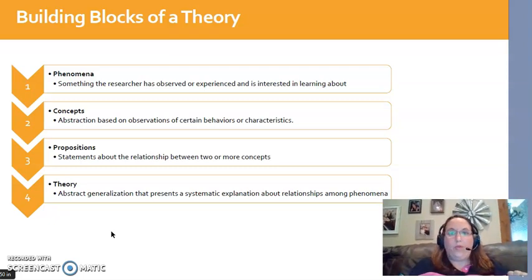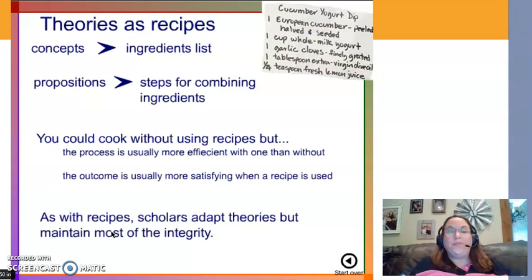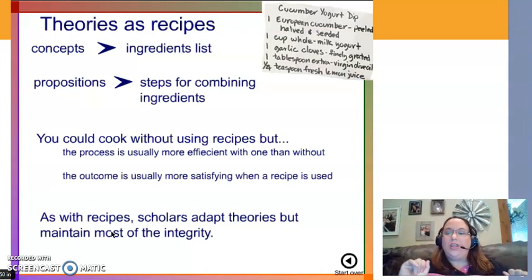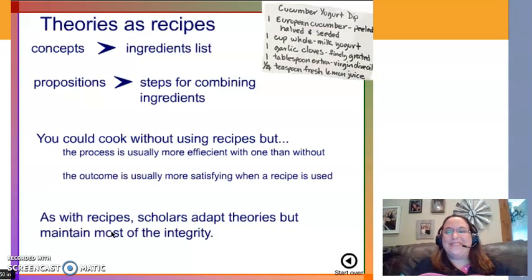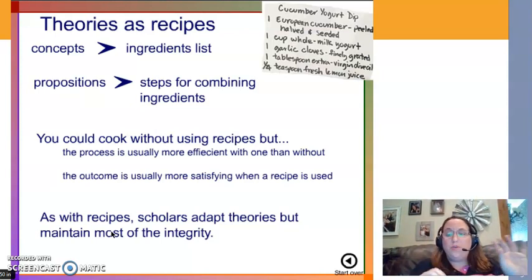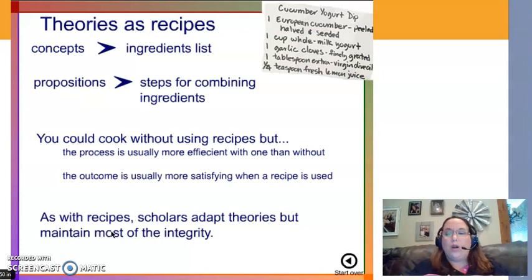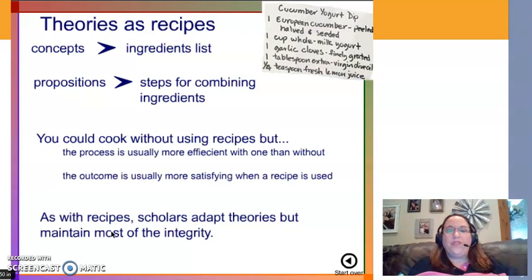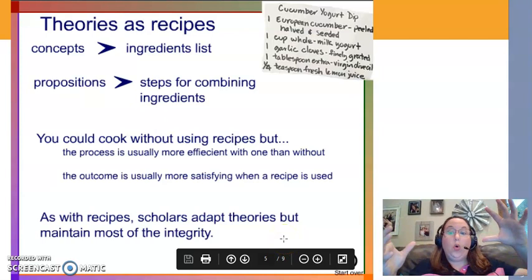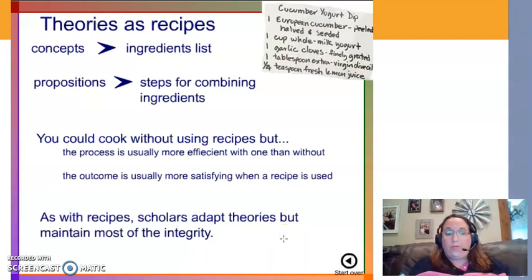A theory is our attempt to explain some part of nursing — why a phenomenon happens the way it does. You can think of it like a recipe. The concepts are the ingredients: parsley, cumin, oregano. The propositions are how you combine the ingredients — marinate your chicken, put in lime juice, cumin, paprika, refrigerate for 30 minutes. That's your proposition — how all those ingredient-concepts relate together. You can cook without a recipe, but using one gives you a more consistent, predictable outcome. The theory is the whole recipe put together.